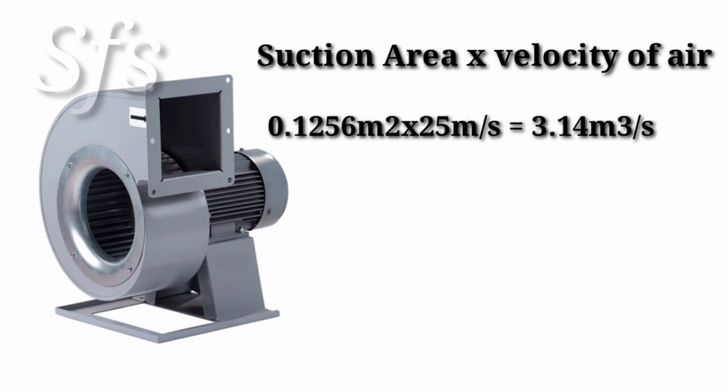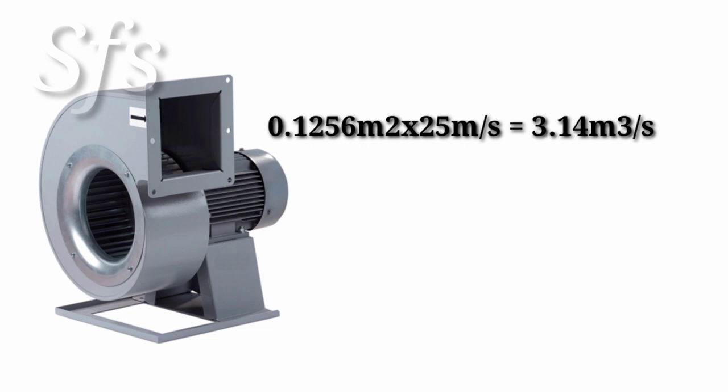Now what we have to do is simply multiply the cross-section area with the velocity of air. This is 0.1256 meter square multiplied by 25 meter per second. The answer is 3.14, and meter square multiplied by meter becomes meter cube per second.